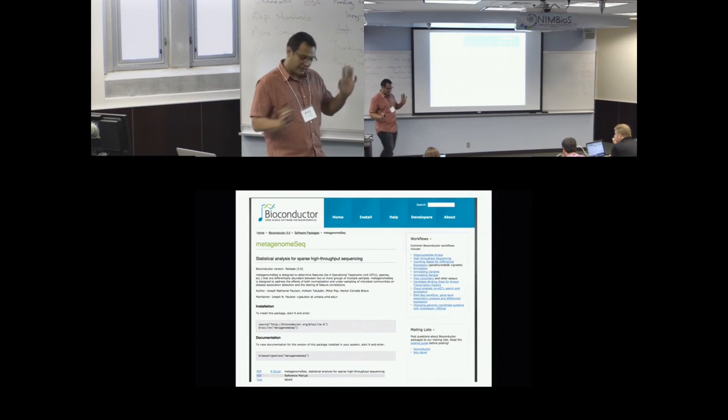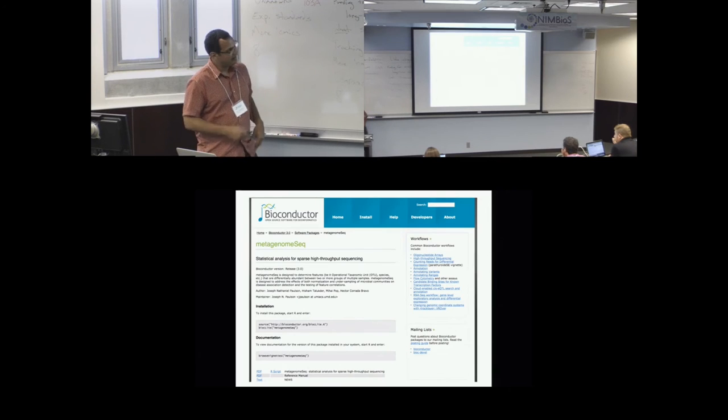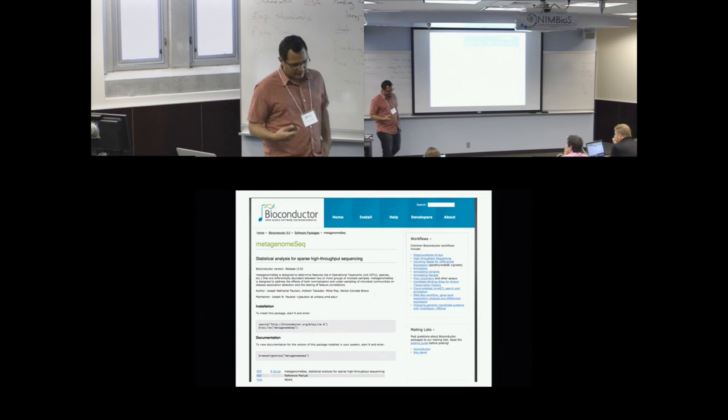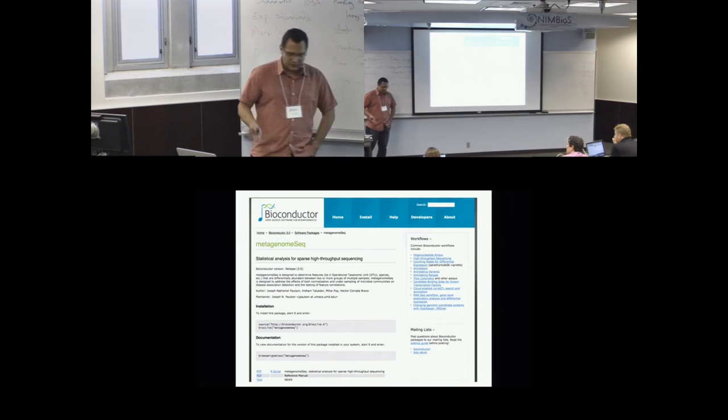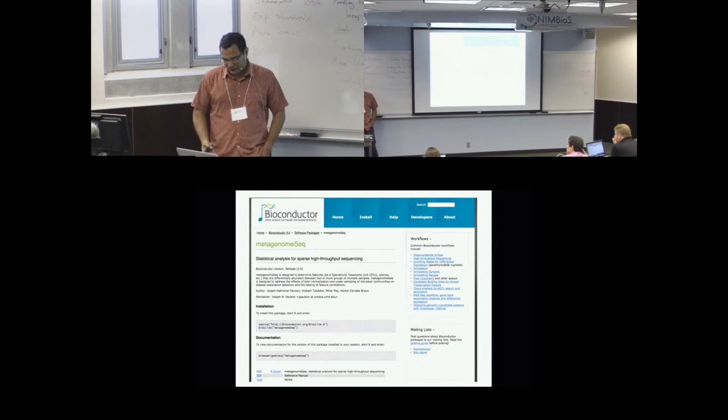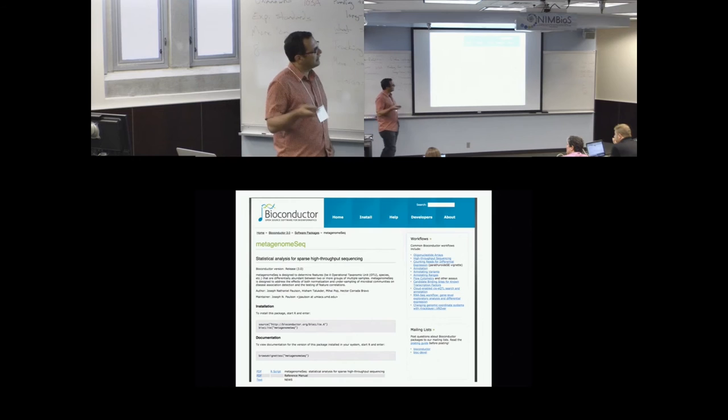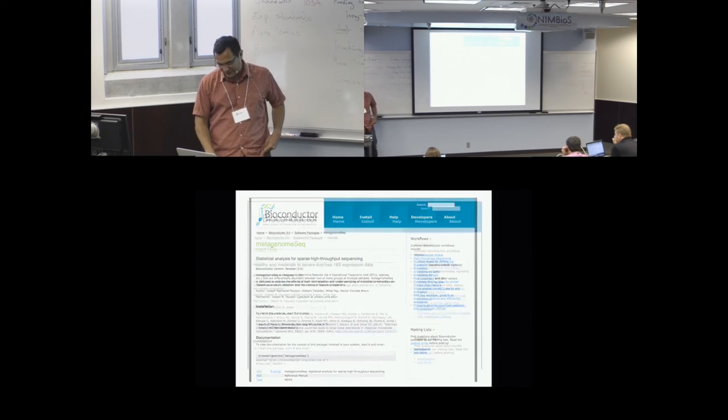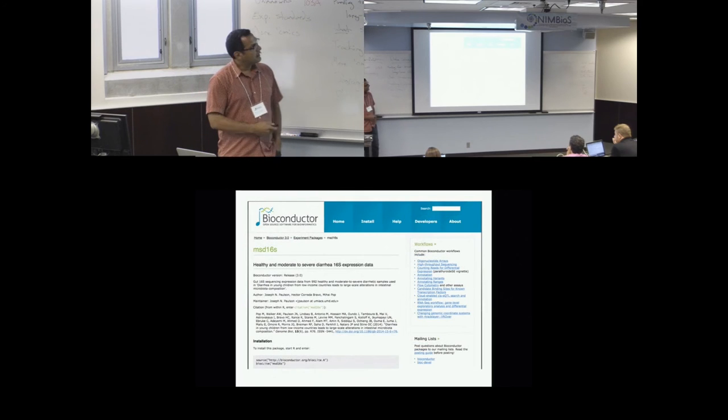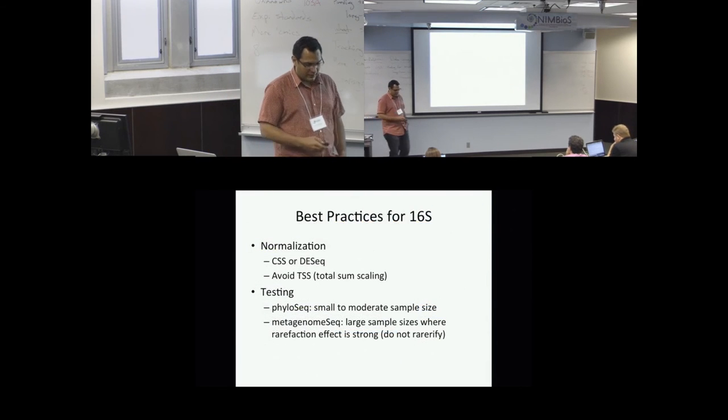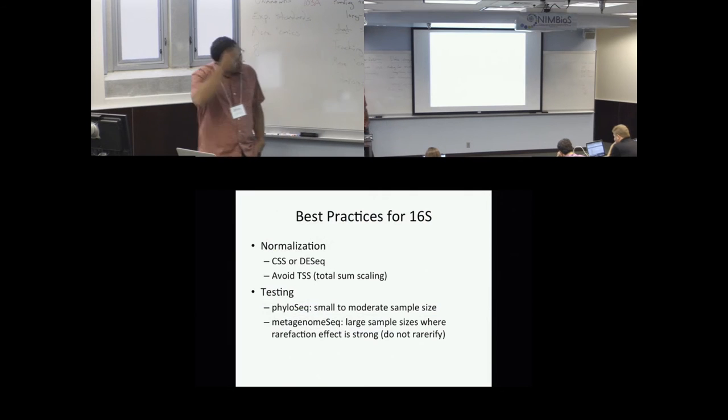Our statistical method is implemented in this package MetagenomeSeq in Bioconductor. I think, besides the statistical model, what is really nice about this package is just a general way of managing metagenomic data in R and Bioconductor. We have ways of doing the standard type of operations that we want to do in these datasets that are not standard in other count-based methods. It's something as simple as aggregating to particular taxonomic levels. Our data for this particular study is also available in Bioconductor.